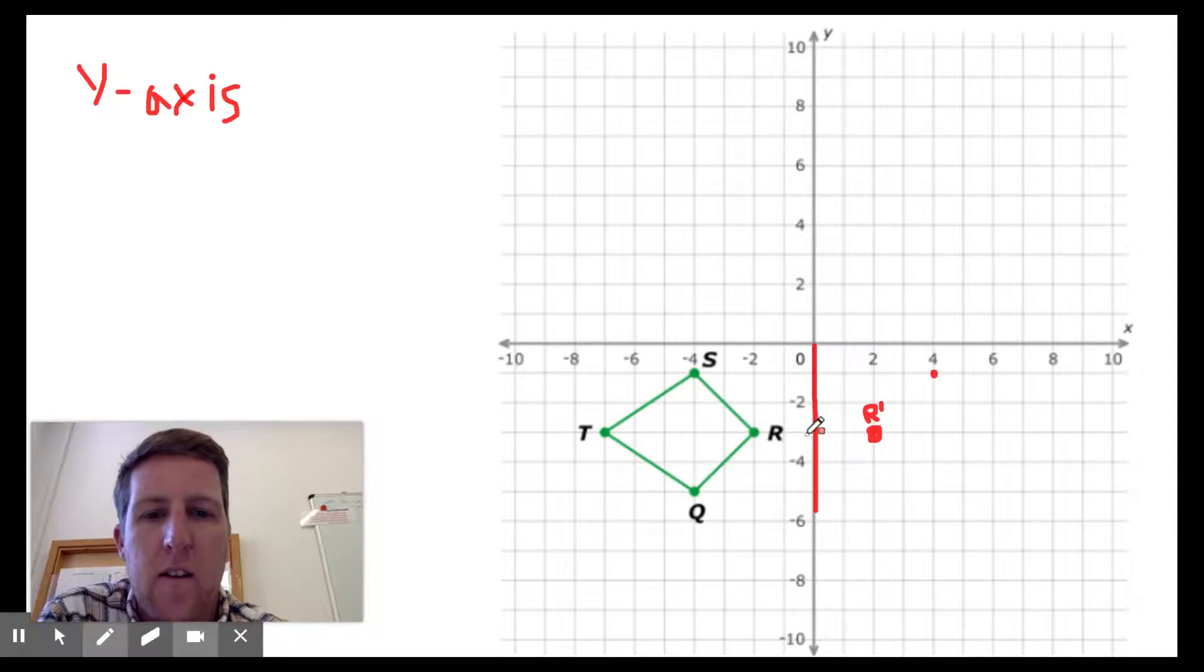And t is two, four, six, seven squares away. So we have to count seven, two, four, six, seven.